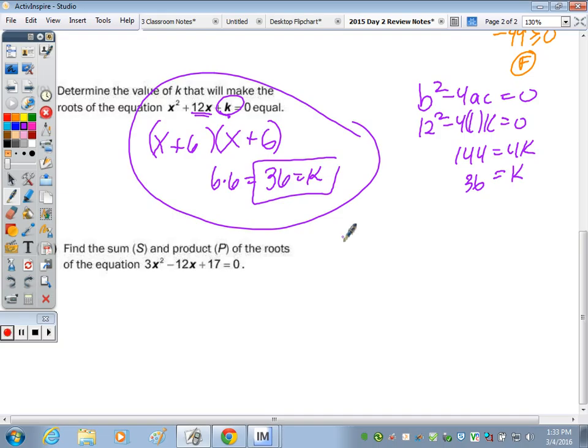Last one. Find the sum and product of the roots. The sum is negative b over a. The product is c over a. So a negative of a negative 12 over 3. 12 over 3 is 4. And then c over a is 17 thirds. Leave it improper. You can't divide. So your sum is 4. Product 17 thirds.